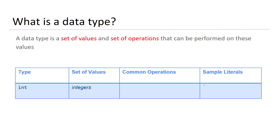For example, 1 is an integer, 328 is an integer, 9000 and 1528, and so on. An integer is basically a sequence of digits between zero and nine. Note that we usually call values in programming literals — a literal is basically a representation of a data type value.